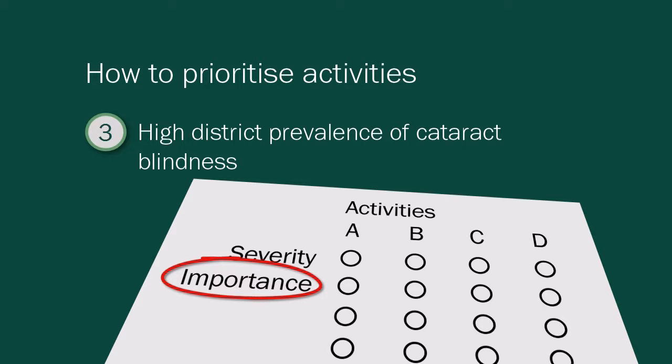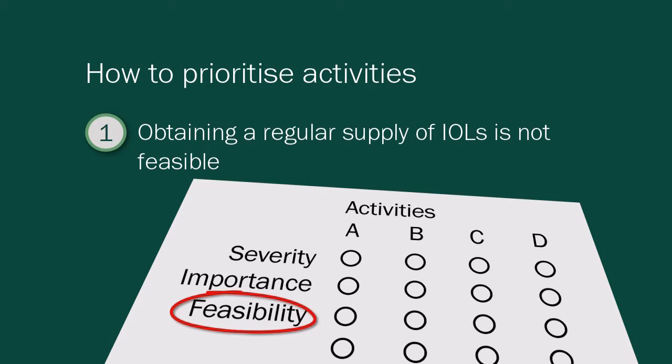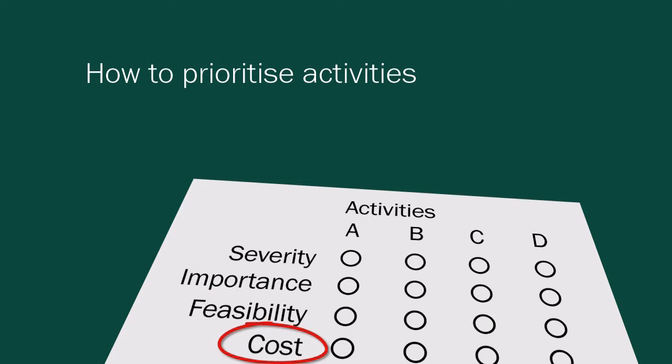Feasibility: when scoring this category, planners should ask themselves the question — is it possible to make the change with the available resources, or are additional resources required? For example, if a planner applies a score of one to an activity to obtain a regular supply of intraocular lenses, this implies that this is not a feasible activity for this plan.